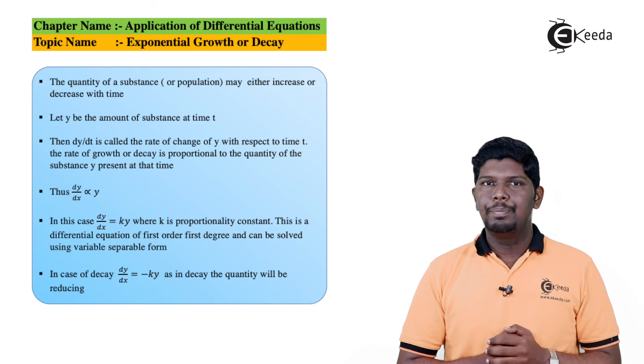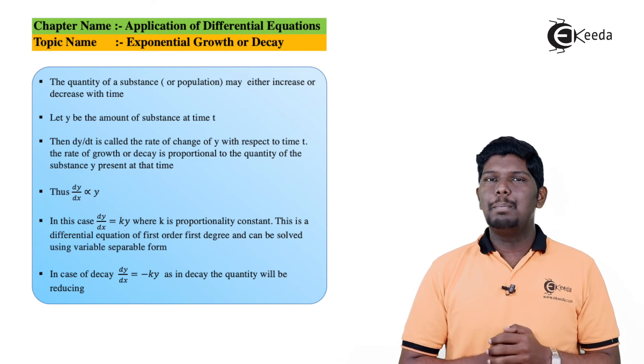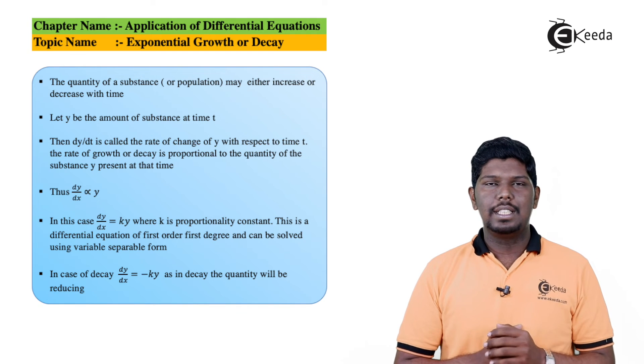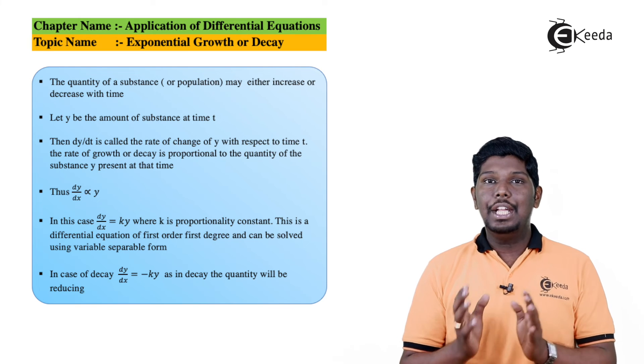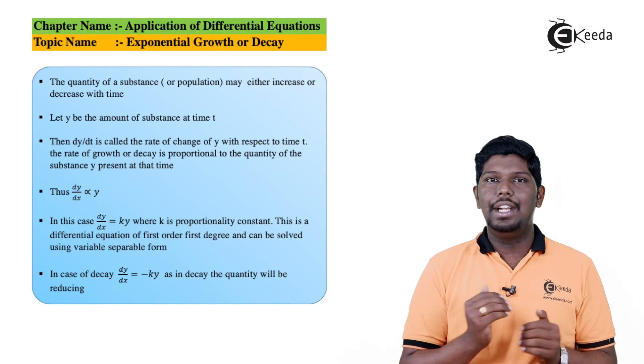Now let us see the case of decay. In case of decay, the best example can be a radioactive substance. We know that a radioactive substance, after a certain interval of time, its mass decreases - that is, we say it disintegrates.